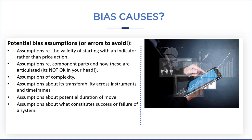We may make assumptions about what constitutes success or failure of a system. Some systems may deliver 1% but on an 80 or 90% win-loss ratio, whereas others may produce a far different win-loss profile. And finally, measurement errors.